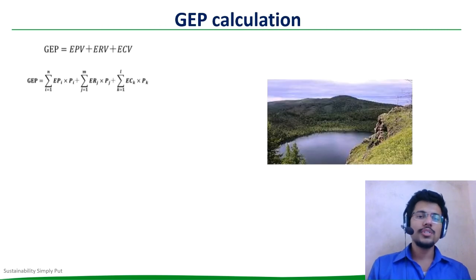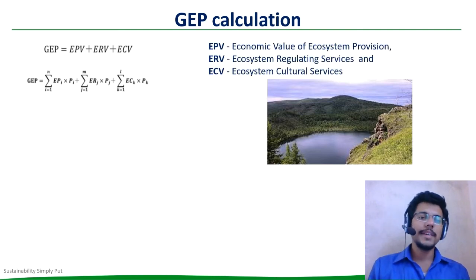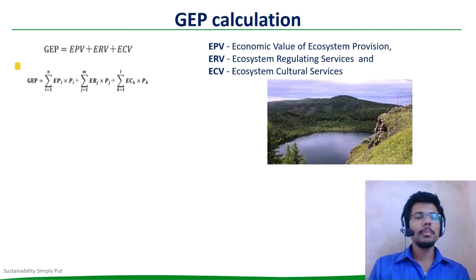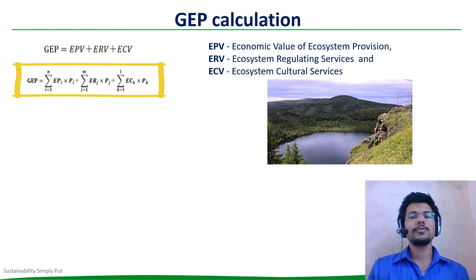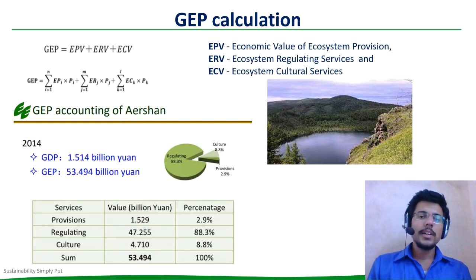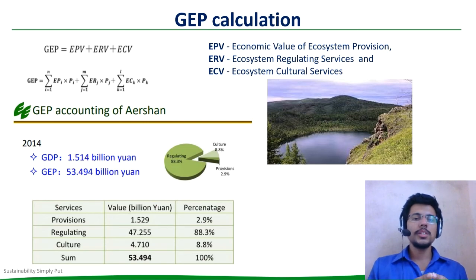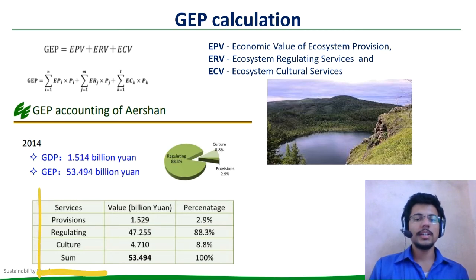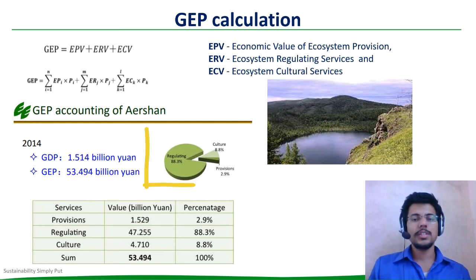GEP is the addition of the total economic value of ecosystem provisioning services (EPV), ecosystem regulating services (ERV), and cultural services (ECV) in a given area annually. The formula you can see now. With this formula, each value is calculated and expressed as you can see in the pilot GEP accounting done for the Arshan area, China. In this accounting, you can see the vast difference between GDP and GEP, and also the split-up of GEP into the three services — provisioning, regulating, and culture — and the pie chart of this distribution percentage in this diagram.